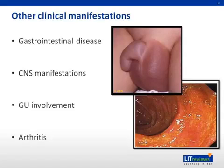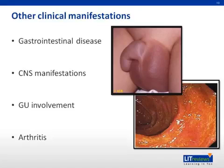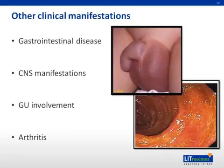Endoscopic evaluation may identify purpura and vasculitis of the intestinal tract, as illustrated in this picture. Musculoskeletal involvement, including arthritis and arthralgia, is also common and may occur in up to 75% of children with HSP. The arthritis is usually oligoarticular and mainly affects the lower limb joints. It also tends to be self-limited, typically resolving within two weeks.